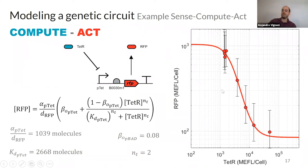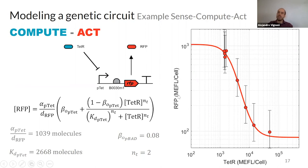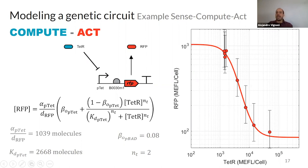Fitting the promoter expression model for this repressor gives new parameter values. The Kd is higher — around 2,500 molecules — because the input is now in molecules rather than micromolar. That Kd corresponds to approximately the half-maximum point of the RFP expression range, and the alpha divided by the degradation rate gives a maximum of about 1,039 molecules.